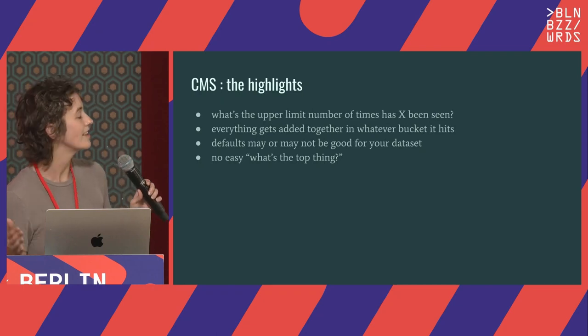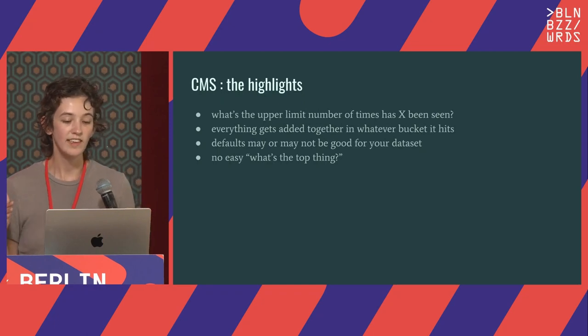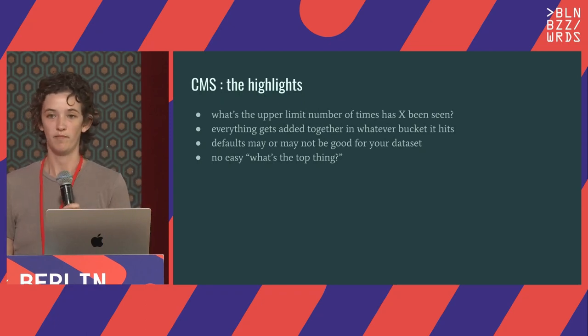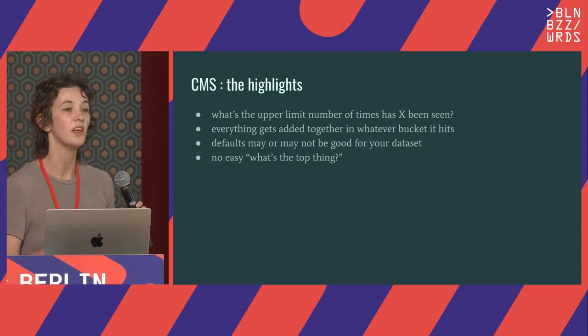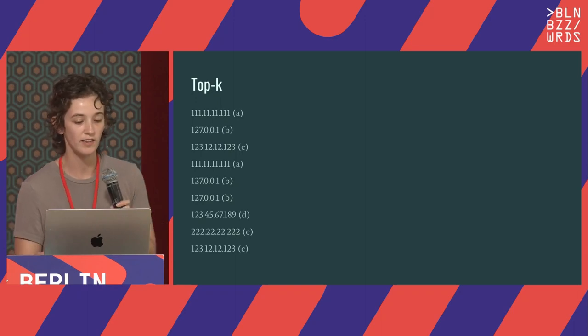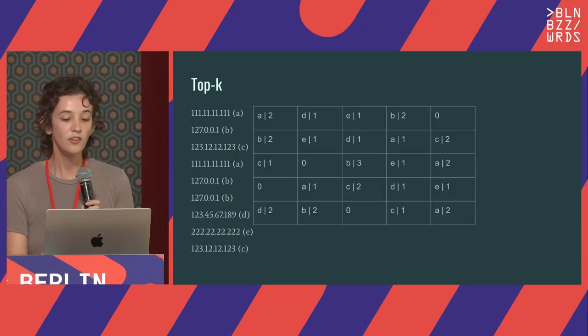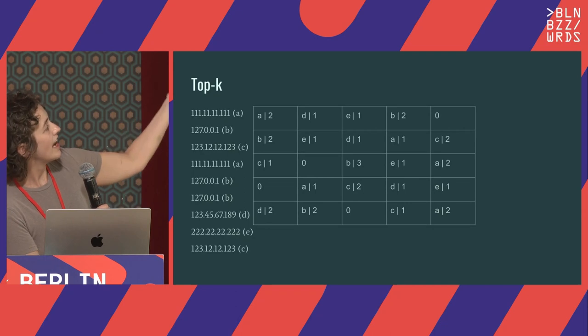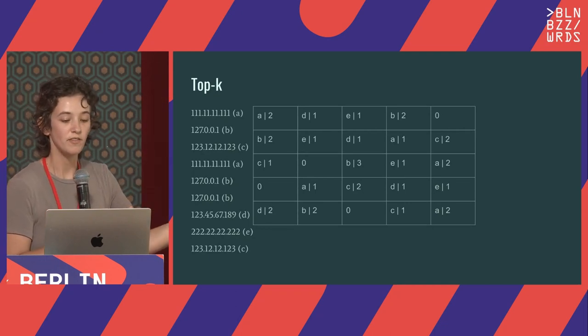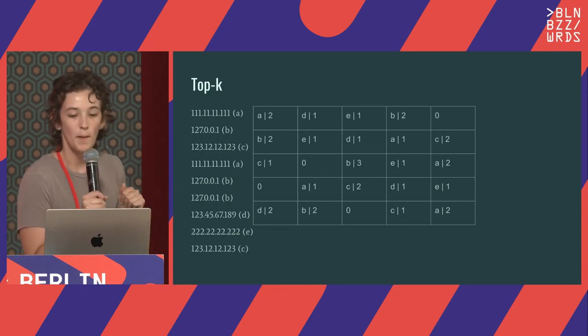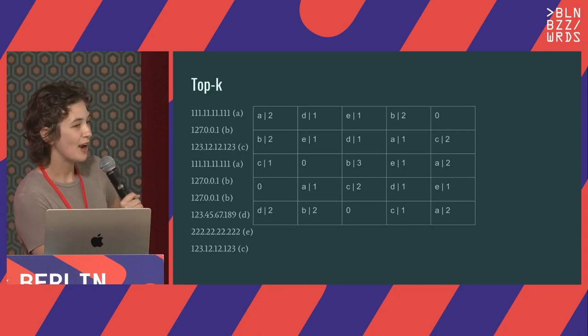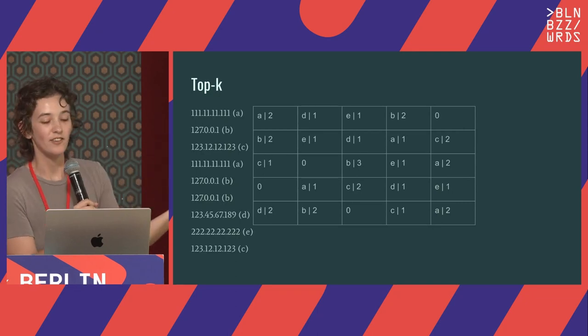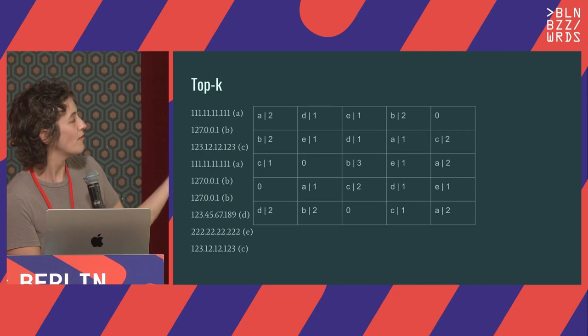One of the other highlights is that for a Count-Min Sketch, there is no easy 'what's the top thing?' — there's no way to very quickly say what's the thing I've added the most. With a Top-K, however, we'll see these same IP addresses — they're arbitrary but they're labeled. Here you'll see that we start keeping a fingerprint, so for each of these things we have IP address A and we have two. But we've added A three times. Looking at B in that top row, the fingerprint says two, but if you look at my list, I've added it three times.